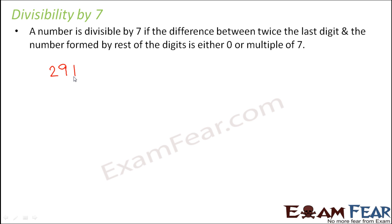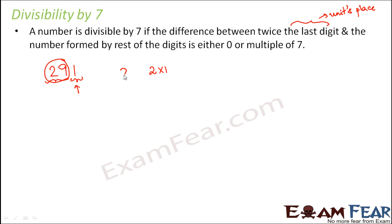Let us take the example of the number 291. We need to find the difference between twice the last digit — the digit at the units place, which is 1 — so that is 2 × 1, and the number formed by the rest of the digits, which is 29. So we compute 29 minus 2 × 1, giving us a difference of 27.